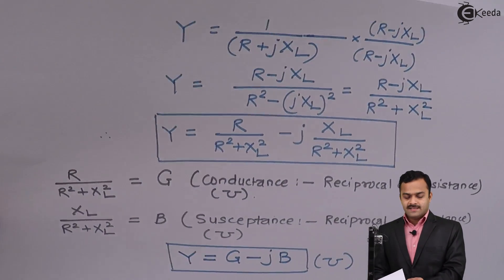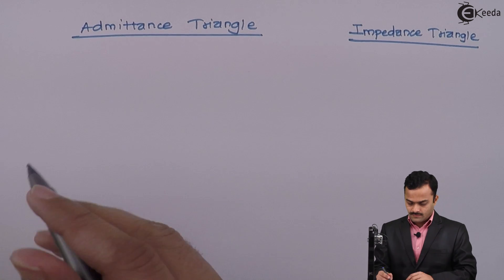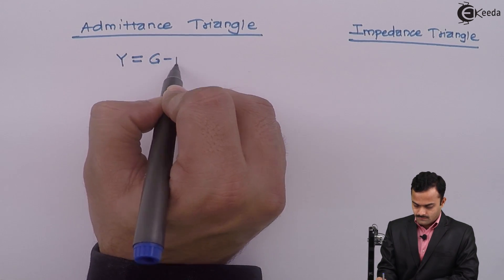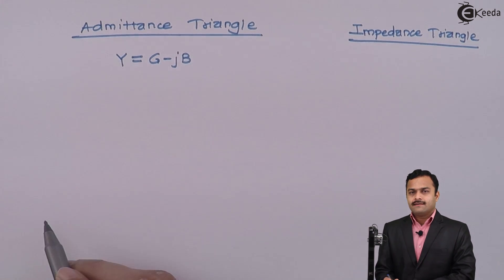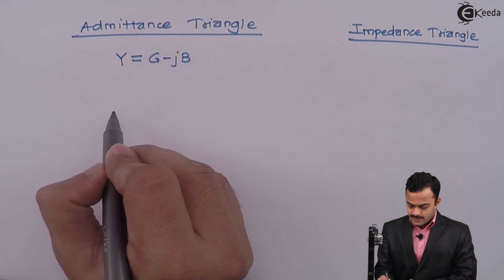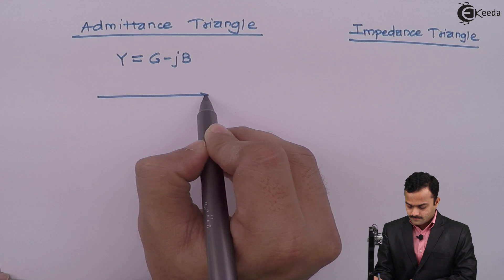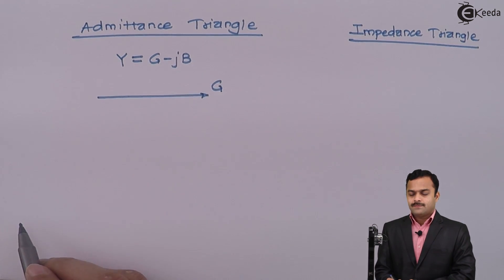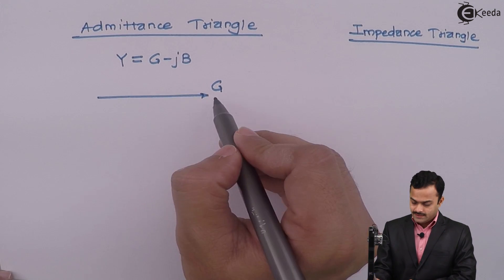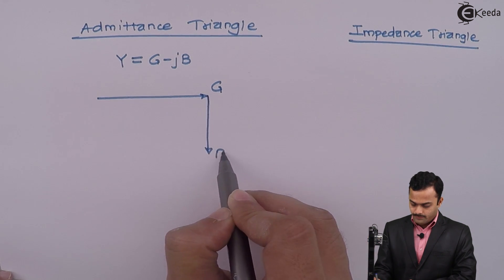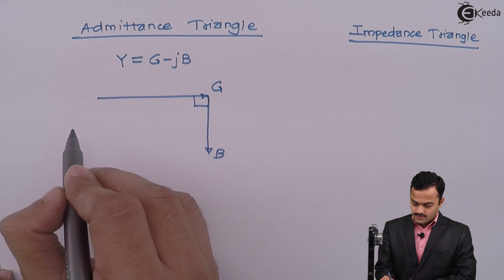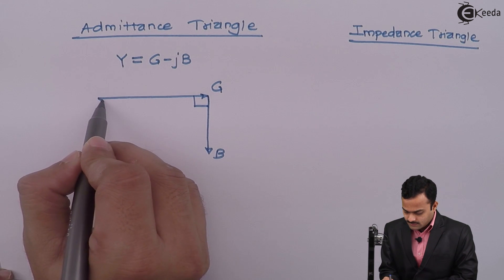Admittance Y = G - jB. If I represent this in triangular form, it will be like this: G is the real part, and -jB is in the negative y-axis direction. You will have B, and this will be Y.